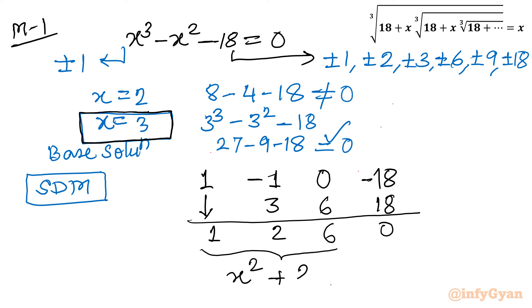The quadratic factor from synthetic division is x squared plus 2x plus 6. One solution is already clear: x equals 3, which is our first real solution. Now let's solve x squared plus 2x plus 6 equals 0 to find the remaining two solutions.